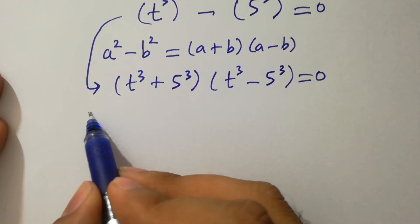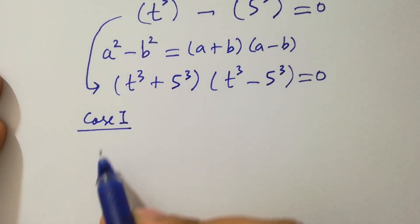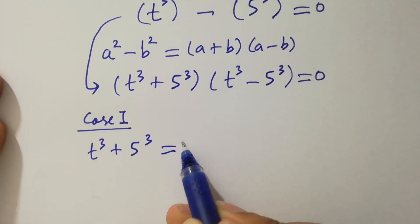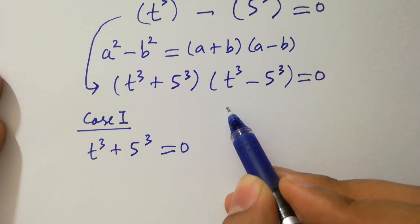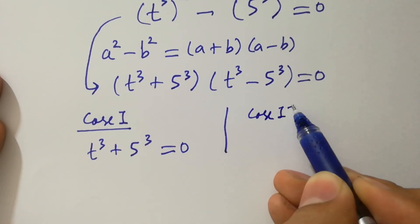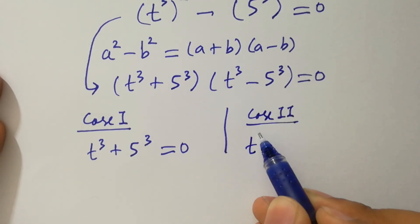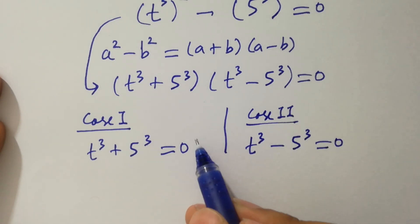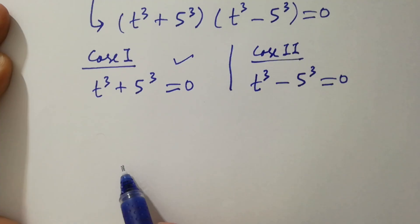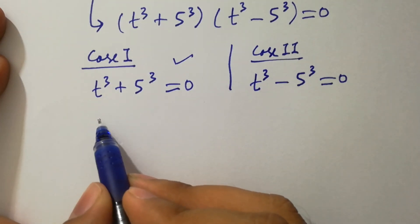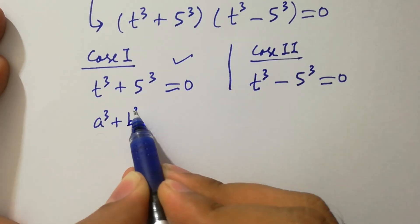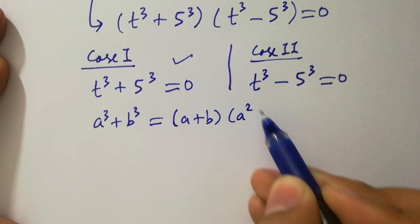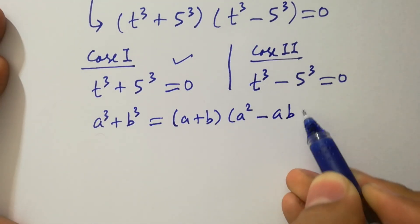Case 1 is t cubed plus 5 cubed equal to 0, and Case 2 is t cubed minus 5 cubed equal to 0. First, take Case 1. We know the formula of a cubed plus b cubed, which equals a plus b times a squared minus ab plus b squared.